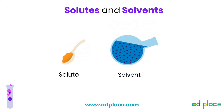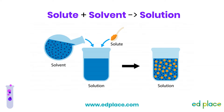A solute is the substance that is being dissolved. So if you add sugar to water, the sugar would be the solute. Whereas a solvent is the substance that is doing the dissolving — in this case, that would be the water. You'd often find that solvents are liquids and solutes are solids. Adding a solute to a solvent gives you a solution. When you add sugar to water, you get a solution of sugary water. Adding salt to water would give you a solution of salty water. It's easier to remember it as an equation: solute plus solvent gives you a solution.